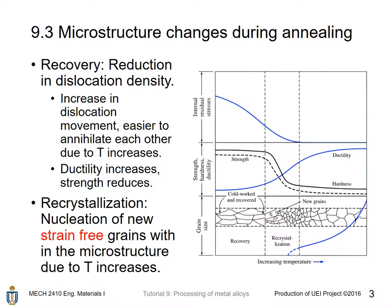During annealing, there are microstructure changes within the metal. The first change is recovery. Recovery means that when temperature increases, there is an increase in dislocation movement, leading to a higher annihilation rate of dislocations. A lower dislocation density means ductility of the material is increased and strength is reduced.